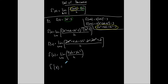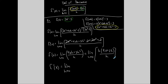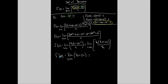Before you take the limit, you want the h to cancel. Every term in the numerator has an h in it, so I can factor out an h. That gives h times 4x plus 2h. The h's cancel, leaving 4x plus 2h. Now I can finally take the limit — replacing h with 0 gives 4x plus 2 times 0, which is 4x.